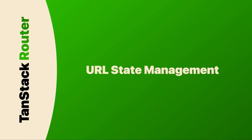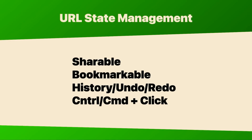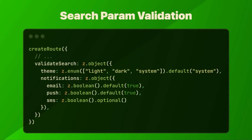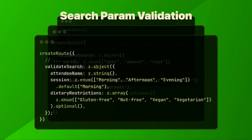TanStack Router takes URL state management very seriously. Not only should we be storing more client state in the URL so that it can be shared, bookmarked, and be historical, but we also deserve way better tools for managing state in the URL. TanStack Router ships with deeply integrated search param validation, which means each nested route can stack validation schemas for only the search params that it needs.